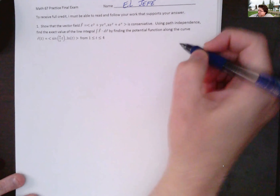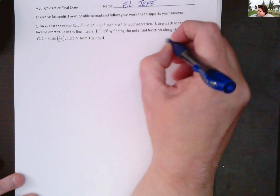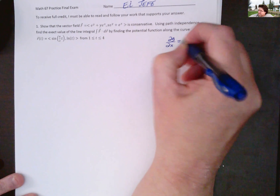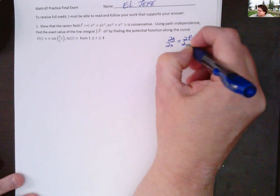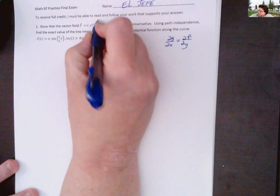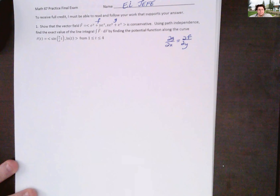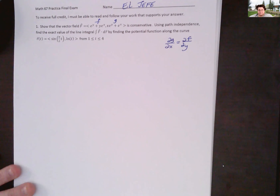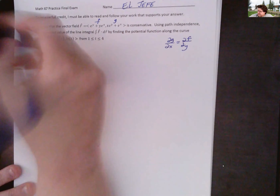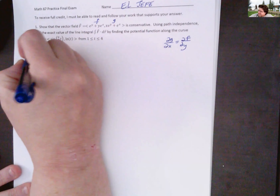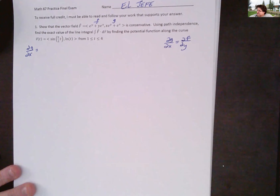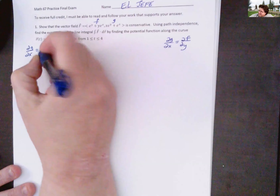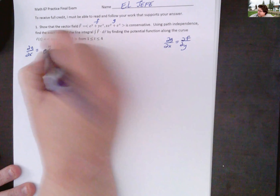For conservative fields, dg/dx equals df/dy. That's what we need to show; the first component is f, the second is g. So to show dg/dx equals df/dy, we just do the derivatives. The derivative dg/dx: for x·e^y plus e^x, e^y is a constant with respect to x, so that gives e^y, and the derivative of e^x is e^x.